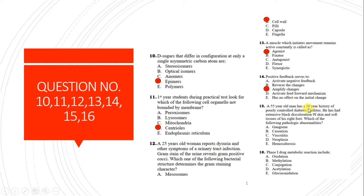Question 15: A 55-year-old man with a 30-year history of poorly controlled diabetes has excessive black discoloration of the skin and soft tissues of the right foot. The correct answer is gangrene, because diabetes is a risk factor and black discoloration of the foot is a characteristic feature of gangrenous necrosis.